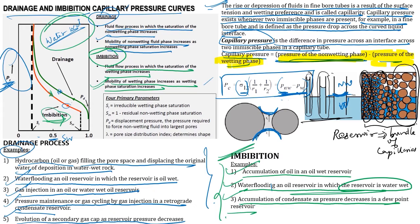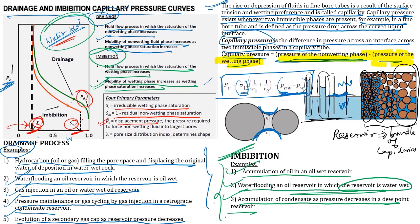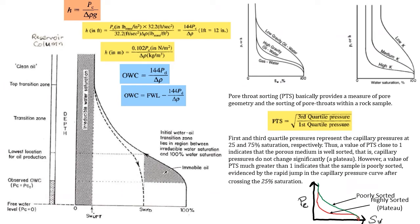Key points on the capillary pressure curve: the irreducible water (wetting phase) saturation, the 1 minus residual non-wetting phase saturation, the initial or connate water saturation, and residual oil saturation. PD is the displacement pressure — the pressure required to force the non-wetting fluid into the largest pores. Lambda is the pore size distribution index based on the shape of pores.